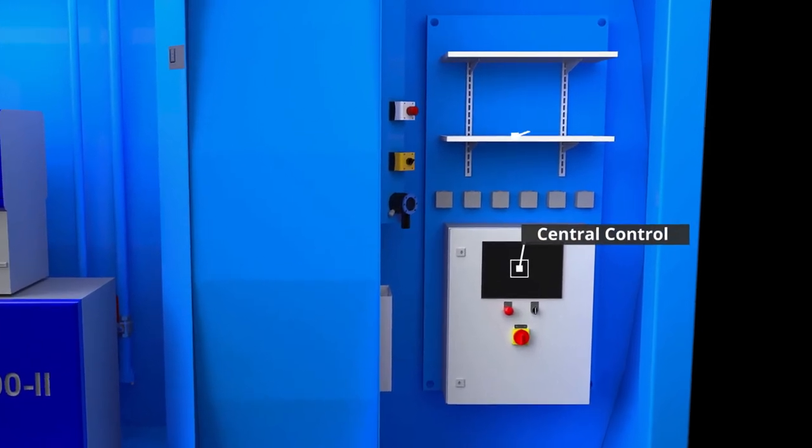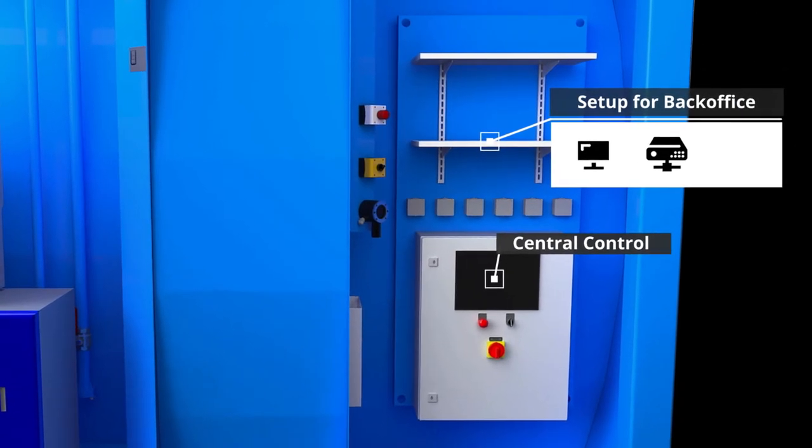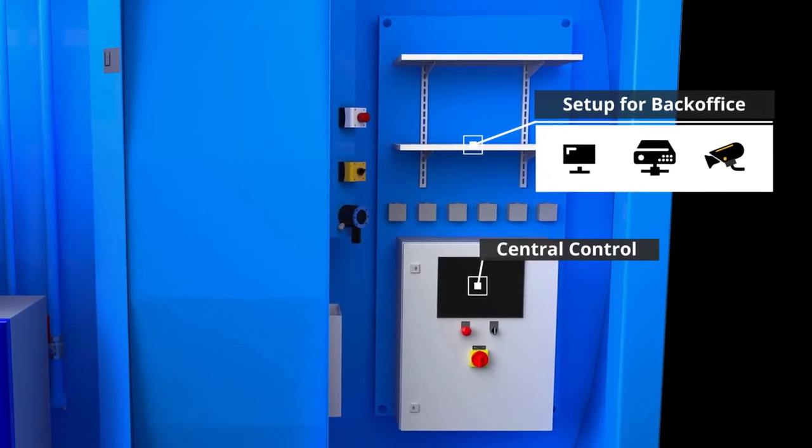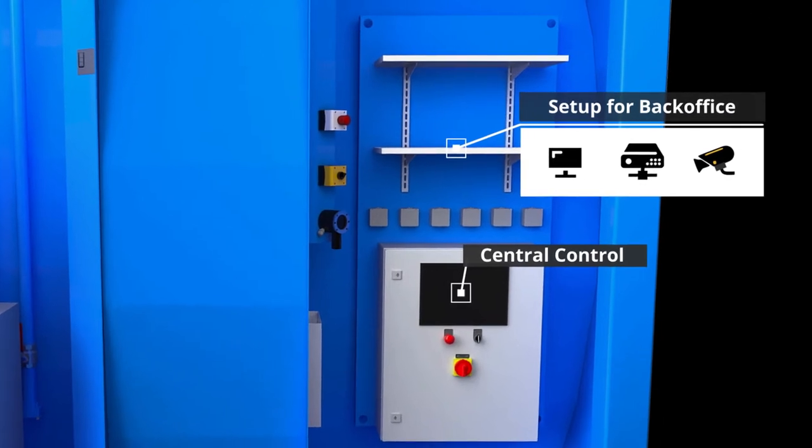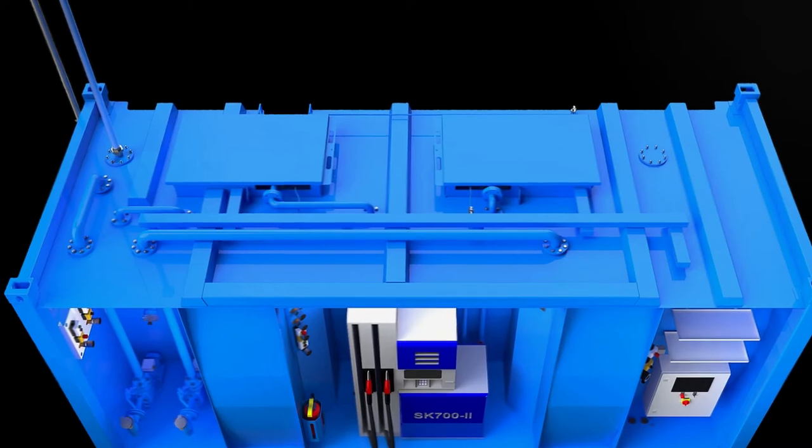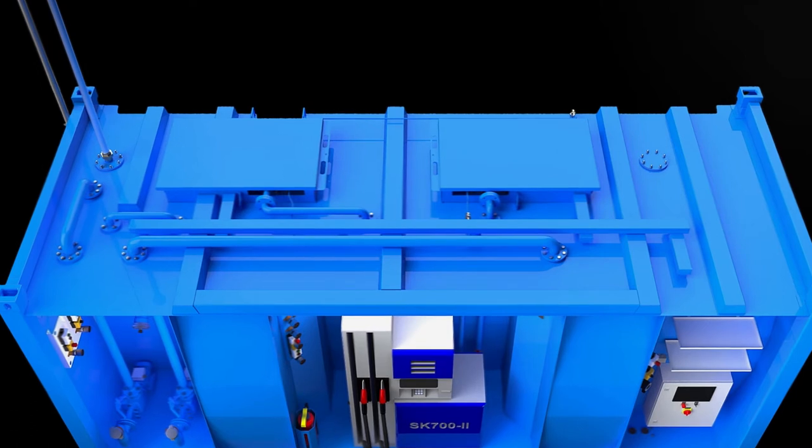In addition, the back office can be set up here, a computer, remote transmission modules or camera system. On the roof are the connection flanges for the filling and extraction pipes.